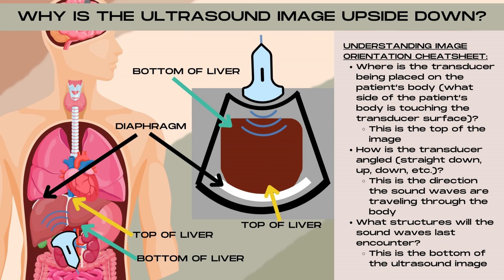Let's go through a quick cheat sheet for understanding image orientation. Where the transducer is placed on the patient's body — so what side of the body is touching the transducer surface — that's going to be the top of the ultrasound image. In this case, the transducer surface is in a subcostal, transverse plane touching the anterior side of the patient. So the anterior surface of the patient is the top of the ultrasound image, which is also the bottom portion of this patient's liver.